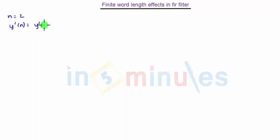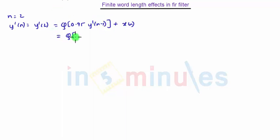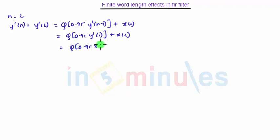Now we will solve for n equal to 2. When n is equal to 2, y'(n) equals y'(2), that is q of 0.95 times y'(n-1) plus x(n), which is q of 0.95 times y'(1) plus x(2). Now q of 0.95 into 0.6875 plus 0 gives us q of 0.653125.